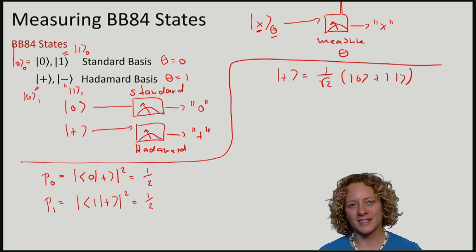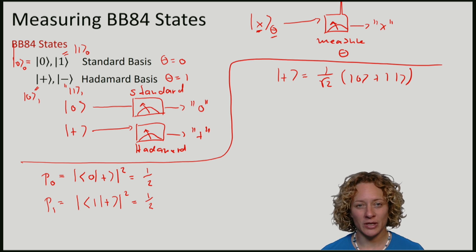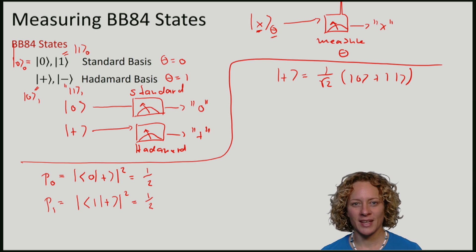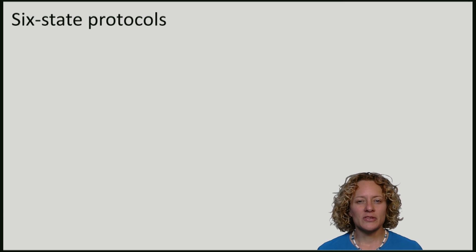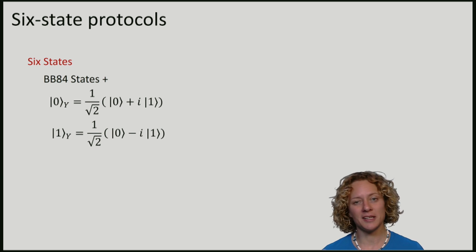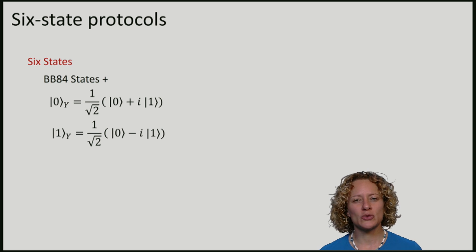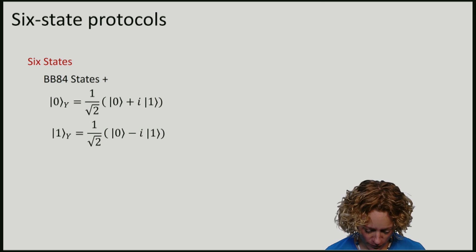There are also other states often useful in quantum cryptographic protocols. You can find out more in the lecture notes - these are called six states. The six states are the BB84 states plus two additional states, namely 0y and 1y.